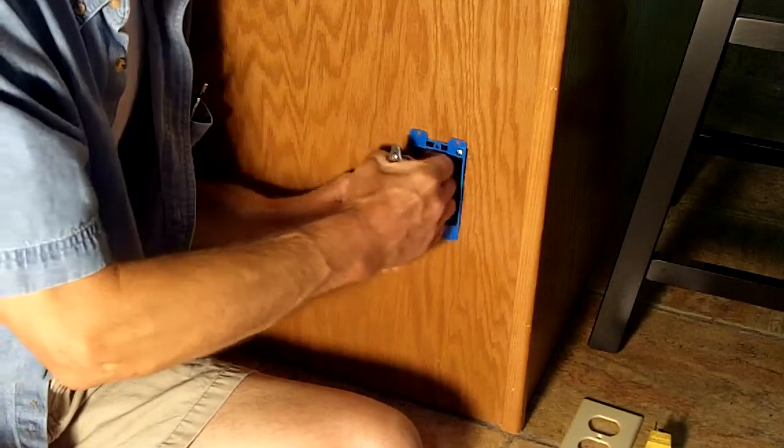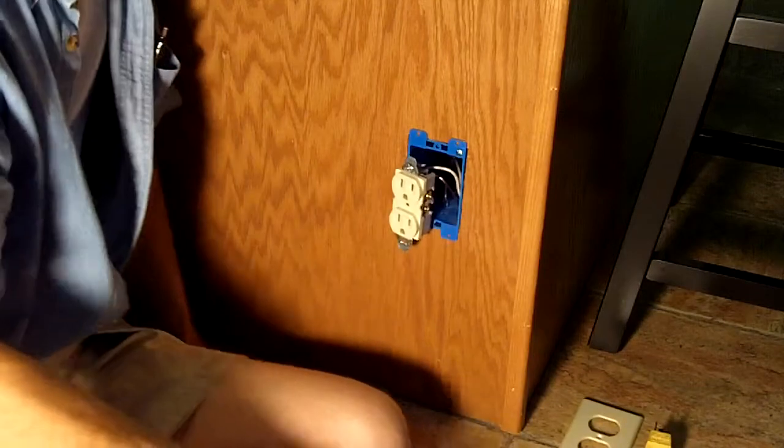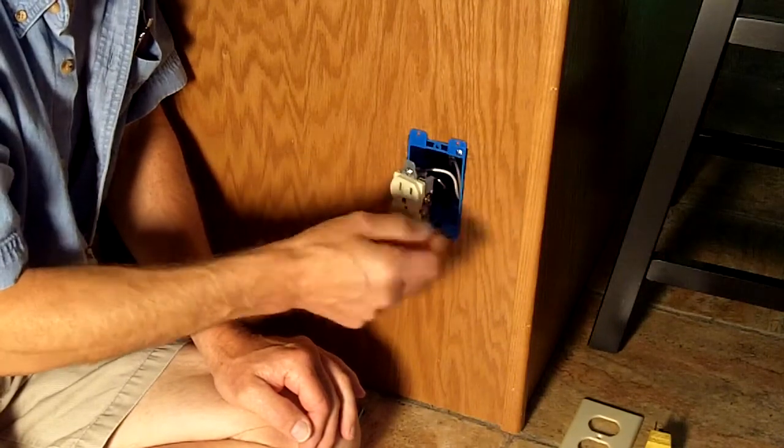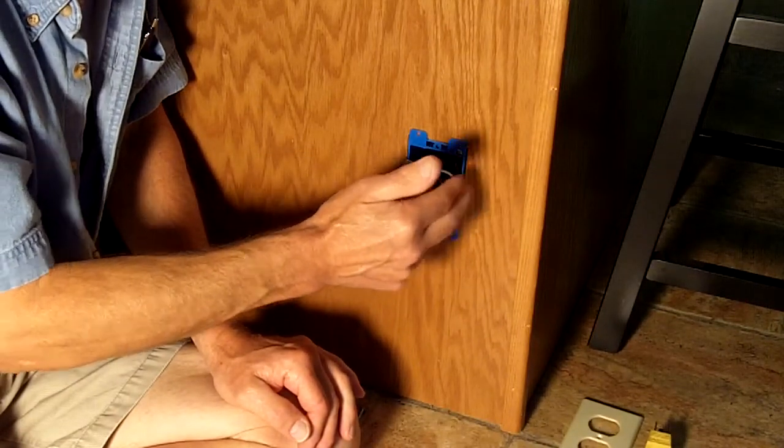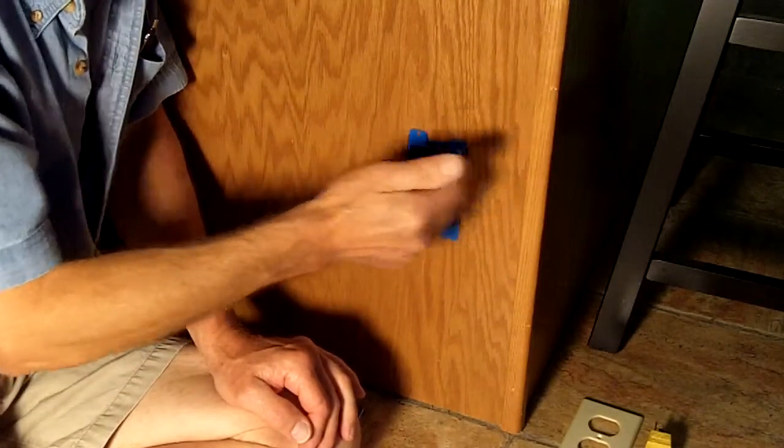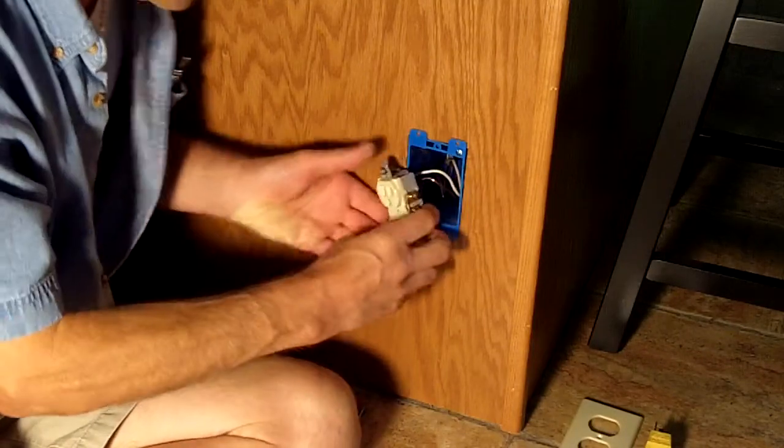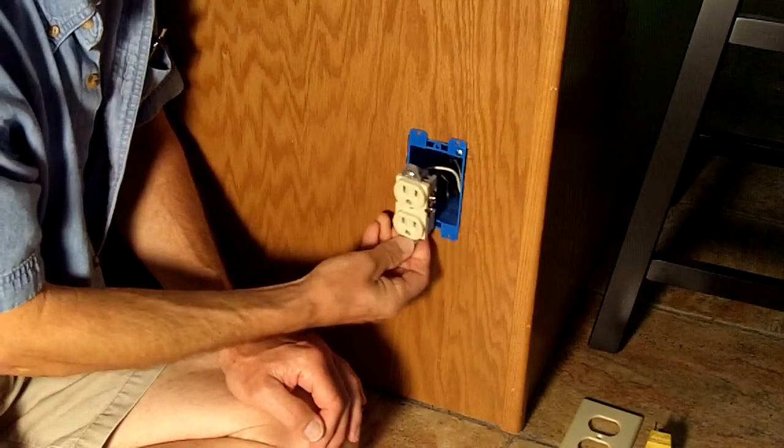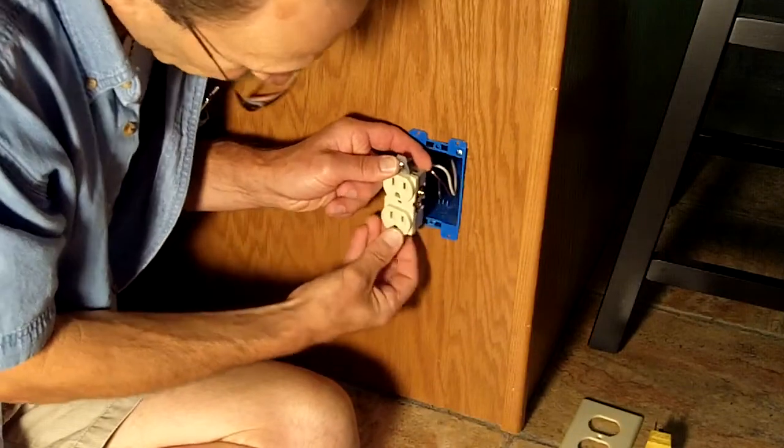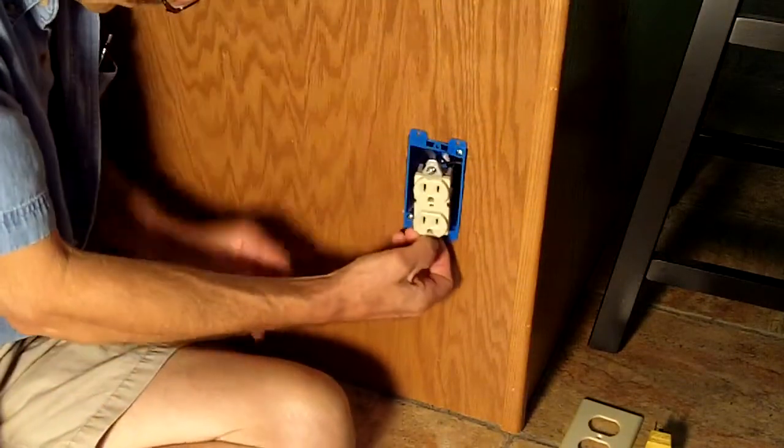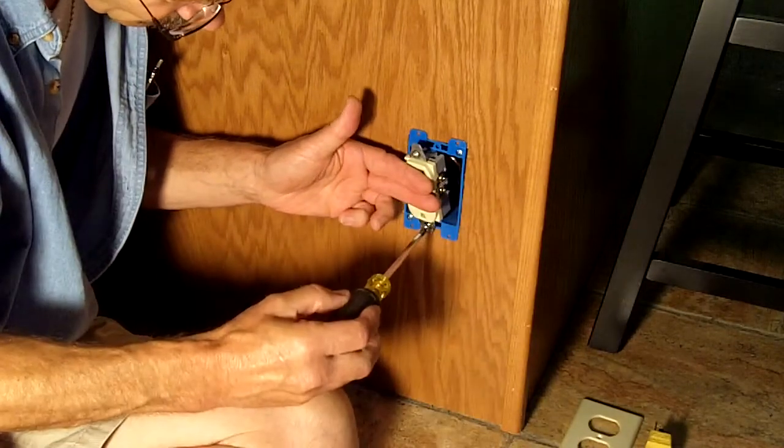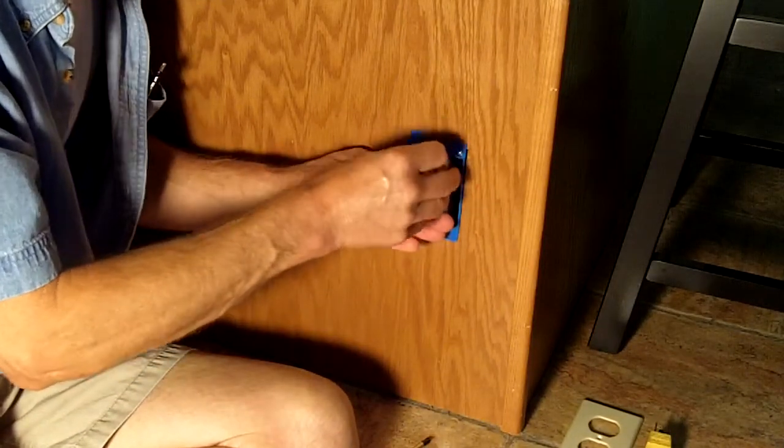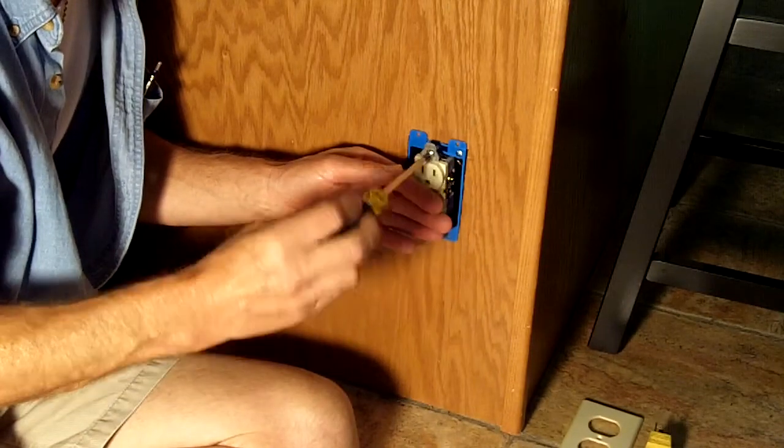I realize that there's some instances where you have two pieces of Romex. If you got another receptacle down the line—this happens to be the last one on the end of the branch circuit—if you had another one going down the line, you'd have your Romex coming in to feed it and you'd have another one tying on to the other screw. That's what that's for, and that would be going somewhere else. Then you start to get a little bit of a crowded box, but still there's no excuse for cutting the wire too short. You need to have at least six inches. There's room to fold that back in there kind of like an accordion.